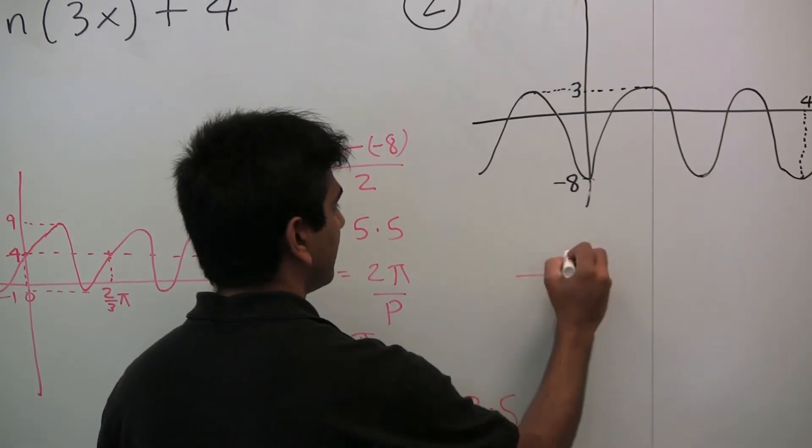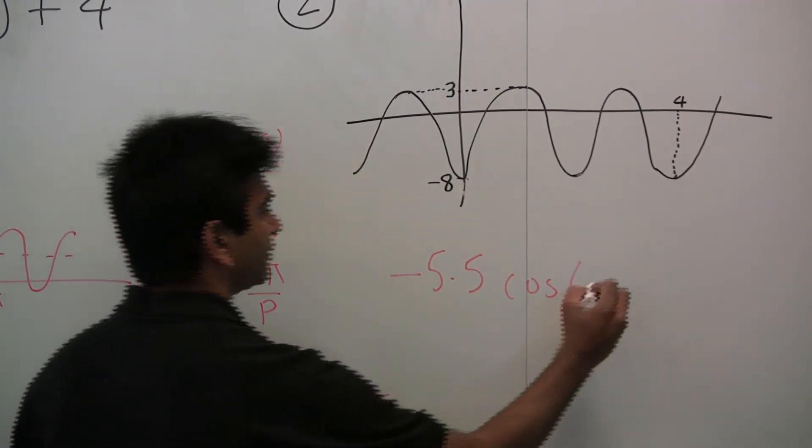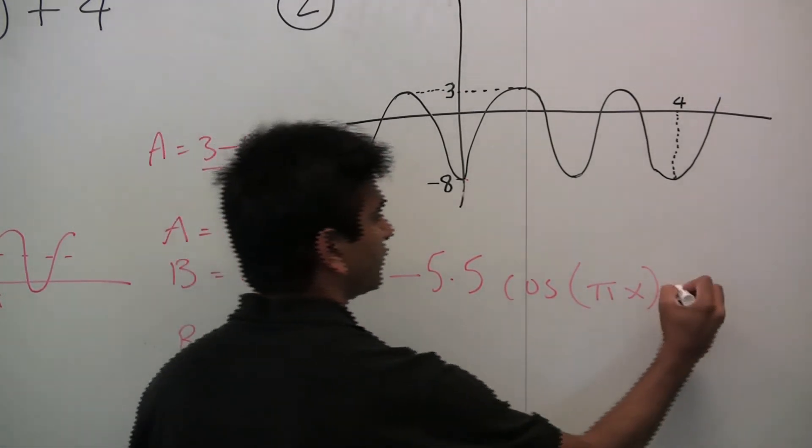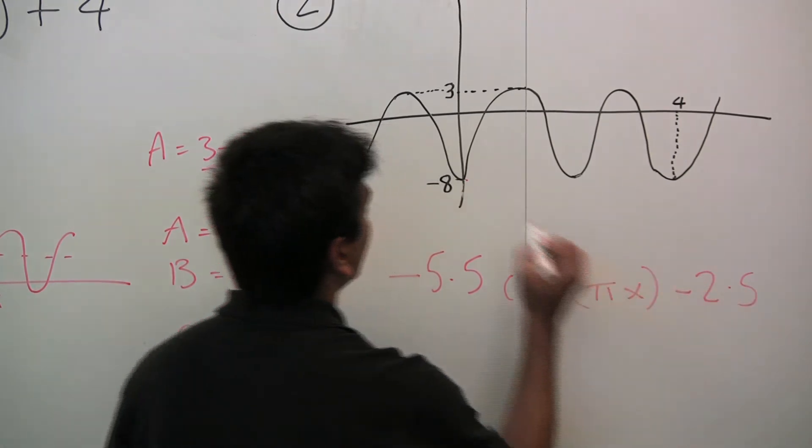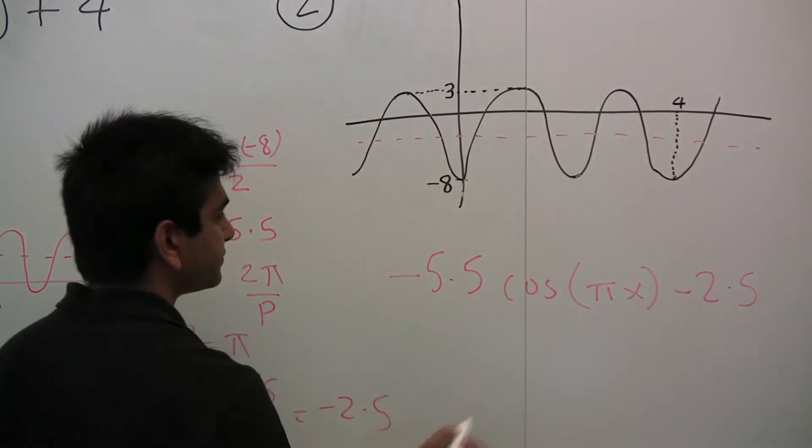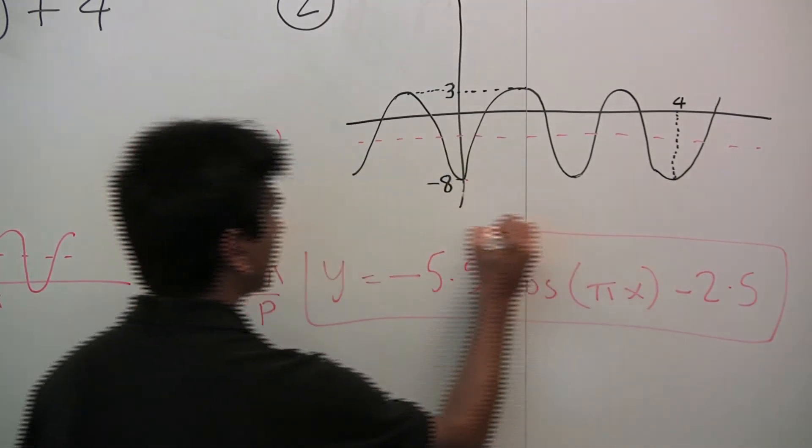Negative 5.5 cosine, now b is π, so π x, and then our c is negative 2.5, so minus 2.5. Negative 2.5 is the imaginary central line over here. This is what y equals. This is the equation of that graph.